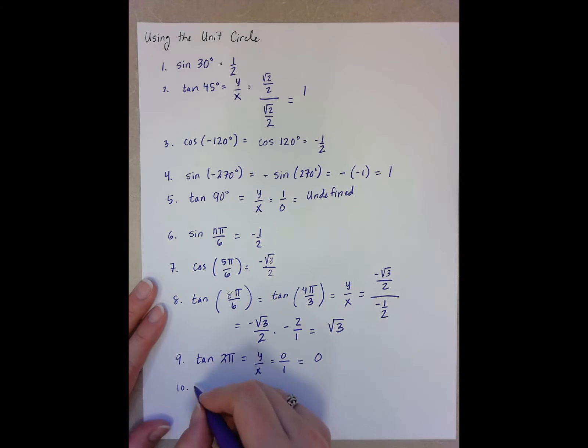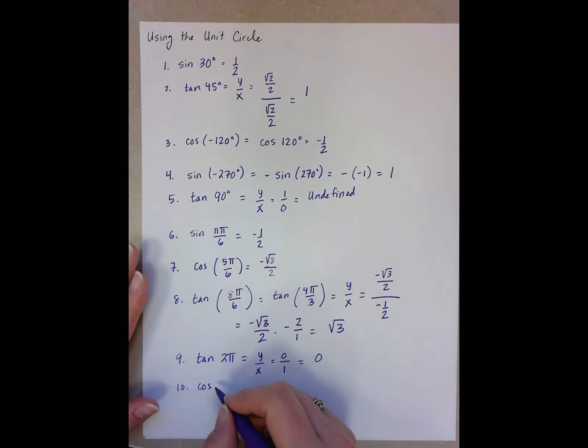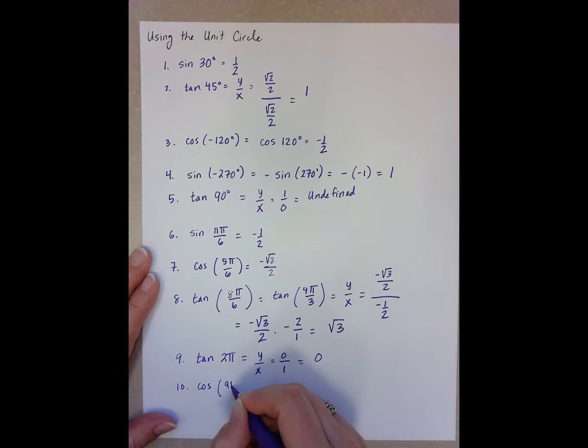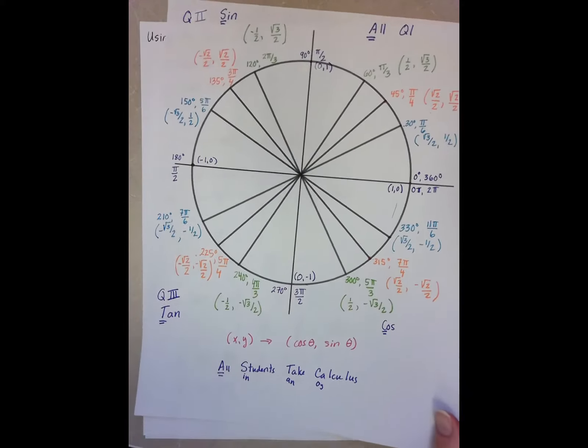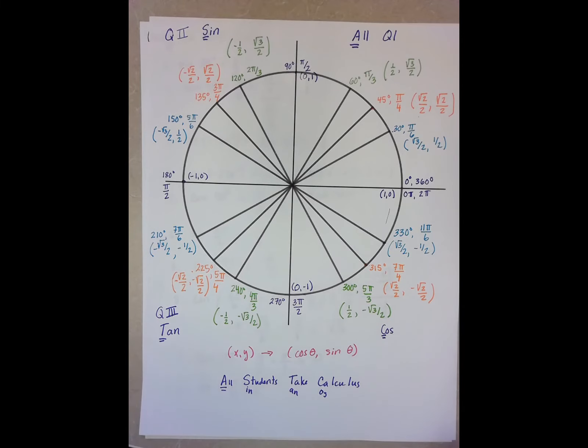And our last example, cosine of 9 pi over 4. Well, this starts getting into our coterminal angles, because 9 pi over 4 is actually bigger, because here we have 7 pi over 4. So this is 8 pi over 4, which means this is 9 pi over 4.